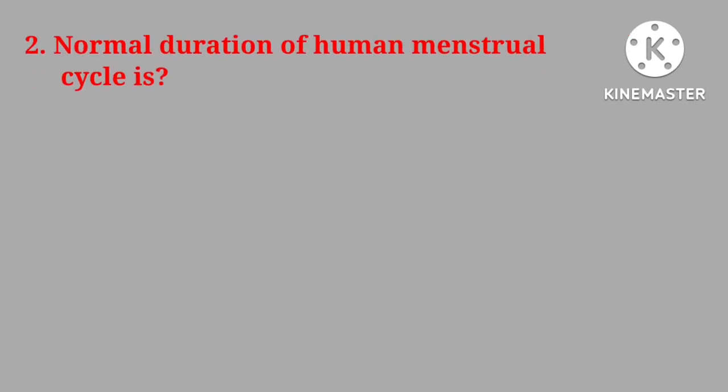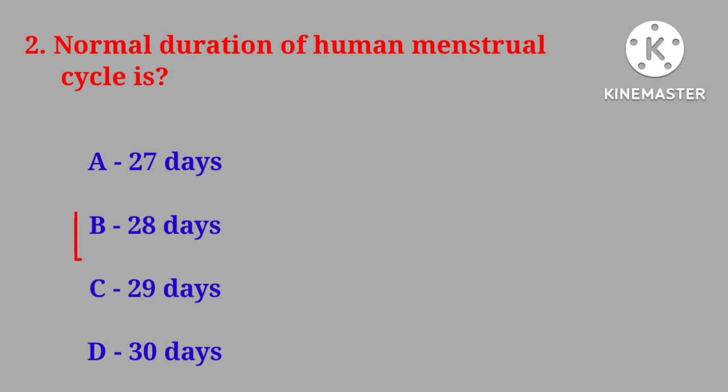Question No. 2: Normal duration of human menstrual cycle is: 27 days, 28 days, 29 days, or 30 days. Correct answer is 28 days.